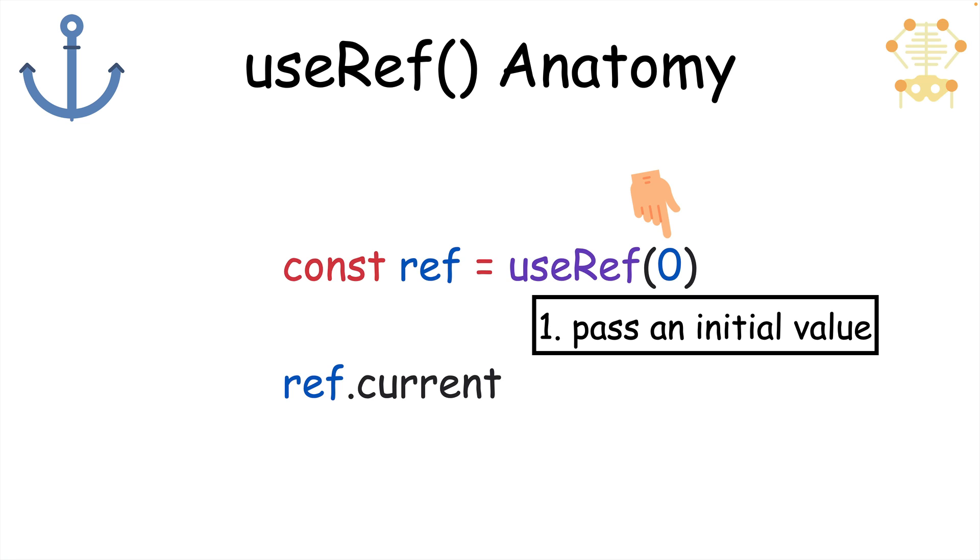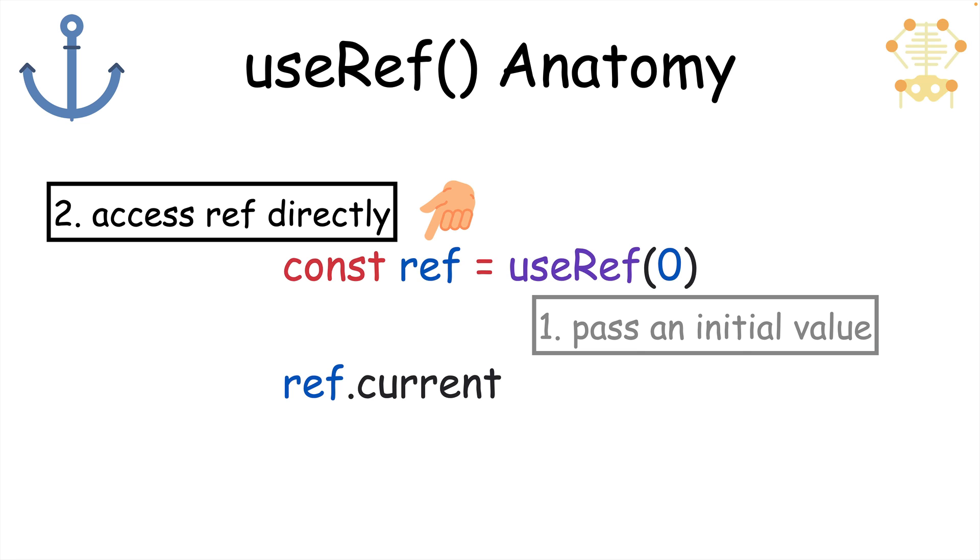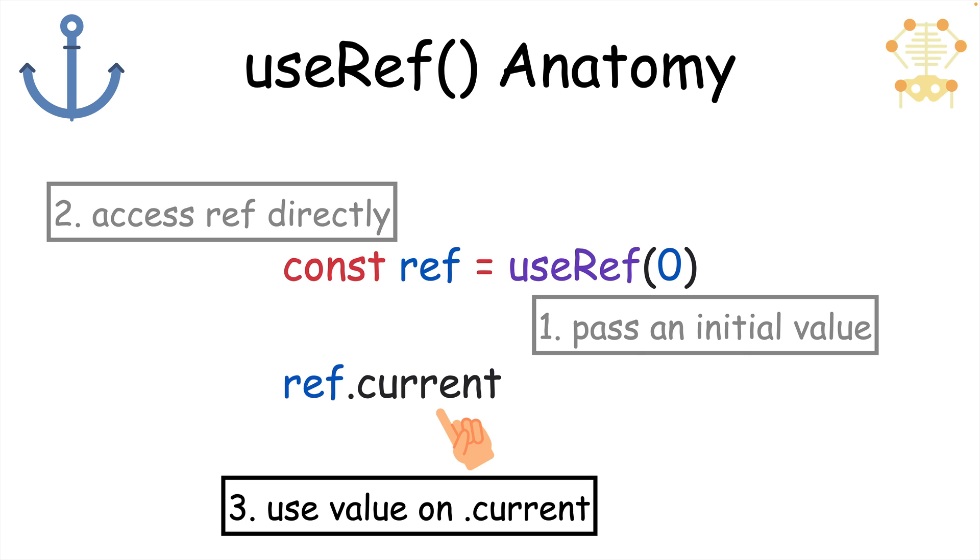Like useState, refs can be given any data value, but it's simpler because it returns only one value, which is whatever you passed it. And to access the underlying value, you can use the current property.